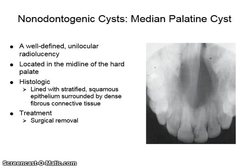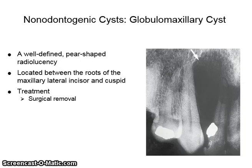The median palatine cyst is a well-defined unilocular radiolucency located in the midline of the hard palate. Histologically, it is lined with stratified squamous epithelium surrounded by dense fibrous connective tissue. It is treated by surgical removal. The globulomaxillary cyst is a well-defined pear-shaped radiolucency located between the roots of the maxillary lateral incisor and cuspid. It is treated with surgical removal.